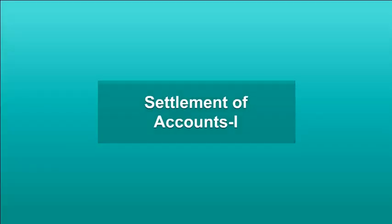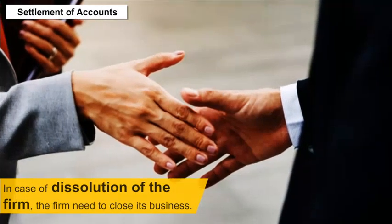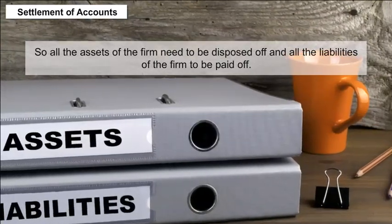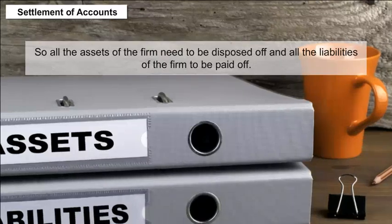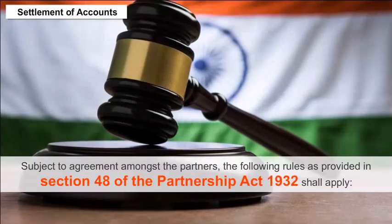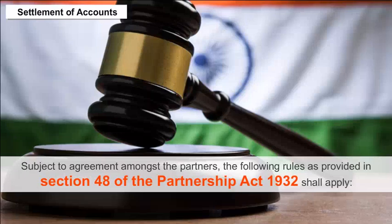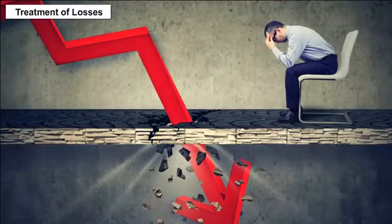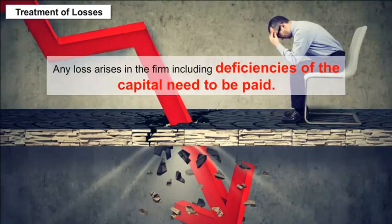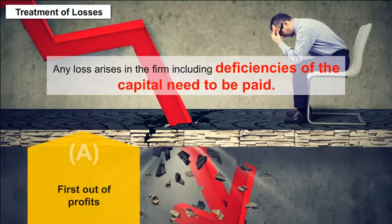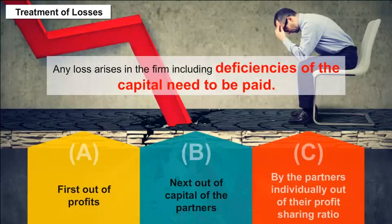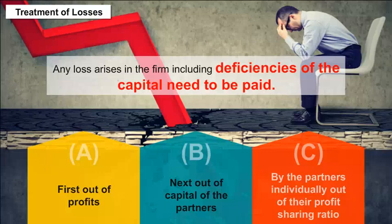Settlement of Accounts: In case of dissolution of the firm, the firm needs to close its business, so all the assets of the firm need to be disposed of and all the liabilities of the firm are to be paid off, subject to agreement amongst the partners. The following rules as provided in Section 48 of the Partnership Act, 1932 shall apply. Treatment of losses: any loss arising in the firm including deficiencies of capital needs to be paid — first out of profits, next out of capital of the partners, then by the partners individually out of their profit sharing ratio.